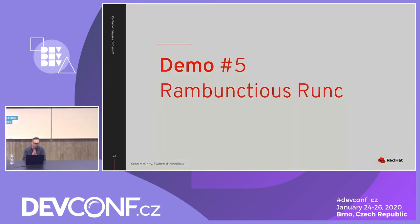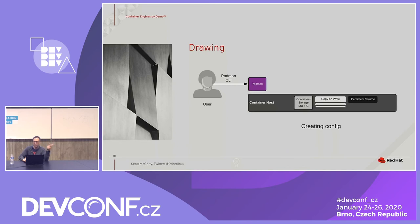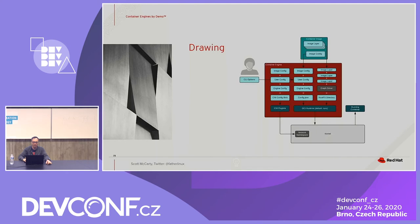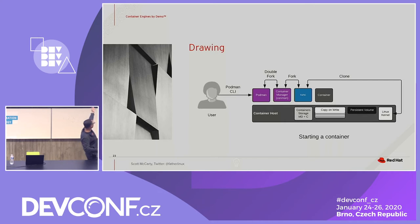Now we hand off to runc. I showed you a simplified version — and I lied to you. What actually happens is Podman talks to something called conmon — container manager. Conmon does what is called a double fork: it runs two forks in a row, disconnects itself from Podman, allows itself to detach, and then calls runc.